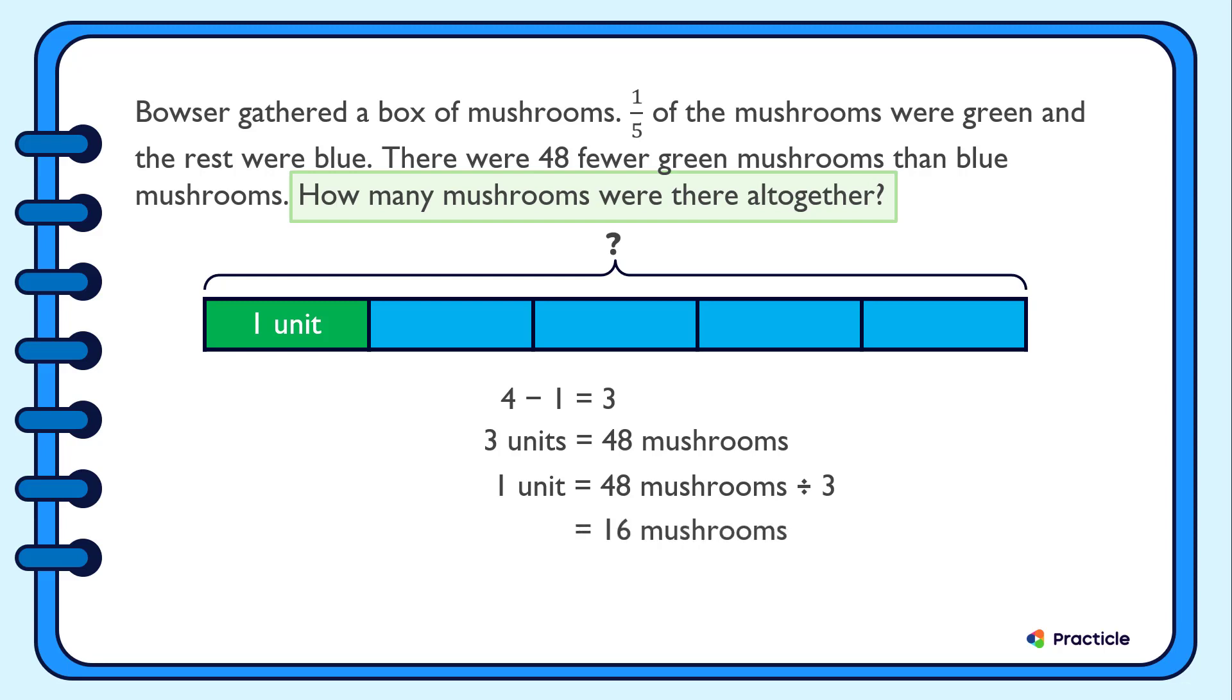And now that we know 1 unit represents 16 mushrooms, finding the value of 5 units should be pretty easy, right? All we need to do is to multiply 16 by 5. And this is going to give us an answer of 80.